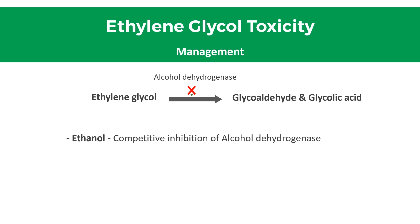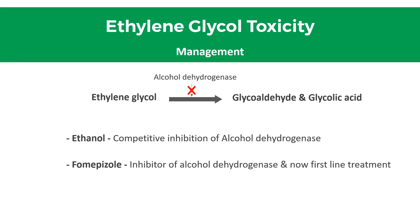The toxic metabolites glycoaldehyde and glycolic acid are responsible for the hemodynamic and metabolic features of poisoning. Fomepizole is now used first-line in preference to ethanol, as it is an inhibitor of alcohol dehydrogenase. In refractory cases, hemodialysis is used.